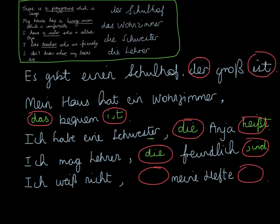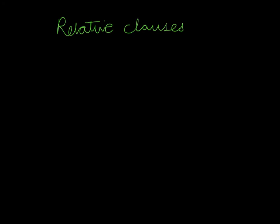Finally, we can look at that last sentence: I don't know where my books are. The verb at the end is sind because it is 'are'. And the linking word you use here is just wo. It works in exactly the same way — you're just not using a relative pronoun. Relative clauses are similar to subordinate clauses which use weil, dass, and obwohl, in that they are also separated from the main clause by a comma and have a verb at the end — word order three.